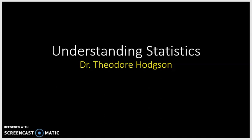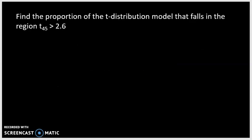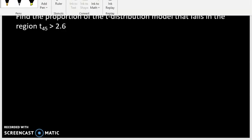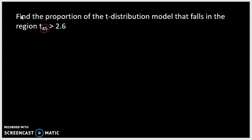Hi everyone. In this video we're going to work some problems related to the t-table. The first problem asks for the proportion of the t-distribution model that falls in the region t with 45 degrees of freedom — which is what the little subscript is — greater than 2.6.